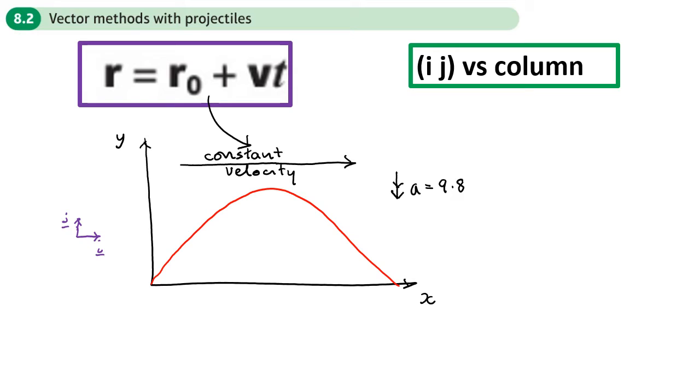We take gravity as 9.8. If we're going to write that as a vector, we can write it as negative 9.8 j, or as a column vector zero, negative 9.8. We need to include gravity - j points up, gravity points down.